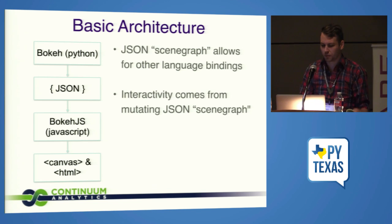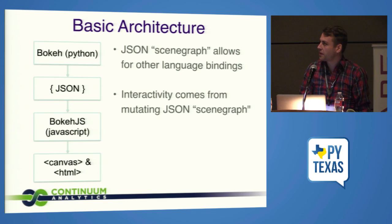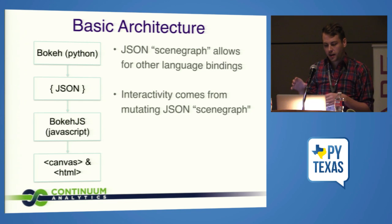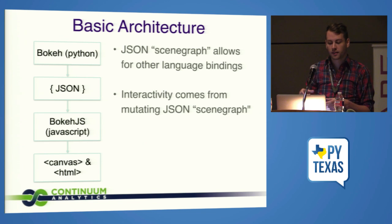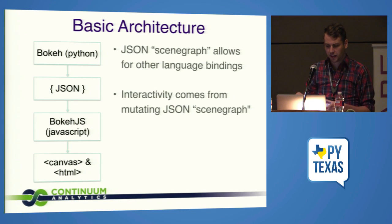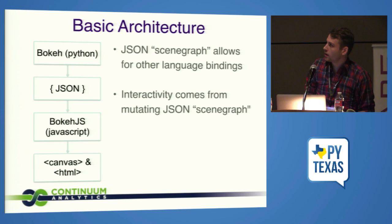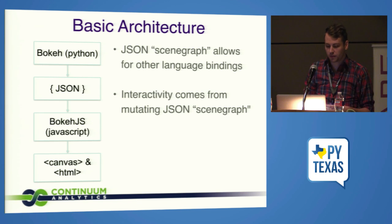In a 20-minute talk I hate to talk about architecture, but it helps to understand what's going on. The real magic of Bokeh is the Bokeh JS layer. Bokeh makes what we call plot objects that, when you call a repr method on them, it serializes and returns a declarative JSON spec that's consumed by Bokeh JS. That's what renders your canvas and HTML elements. Because we have this JSON scene graph intermediate, Bokeh JS isn't Python-specific.